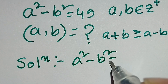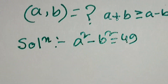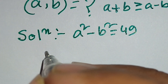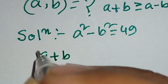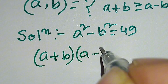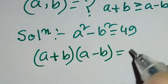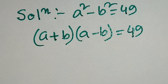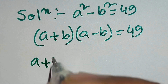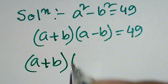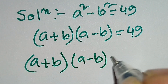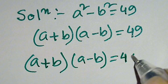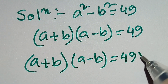The given equation is a squared minus b squared equals 49. We know a squared minus b squared equals a plus b times a minus b, which equals 49. Here, a plus b times a minus b equals 49, and we can write 49 as 49 times 1.